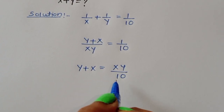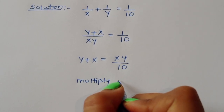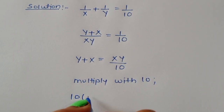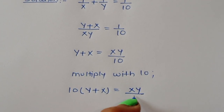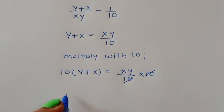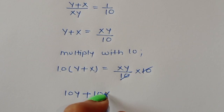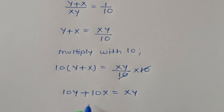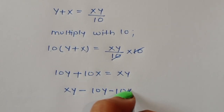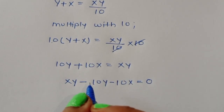To eliminate the 10, we multiply both sides by 10. So 10 times (y plus x) equals xy divided by 10, times 10 — the 10s cancel. We get 10y plus 10x equal to xy. Rearranging: xy minus 10y minus 10x is equal to 0.